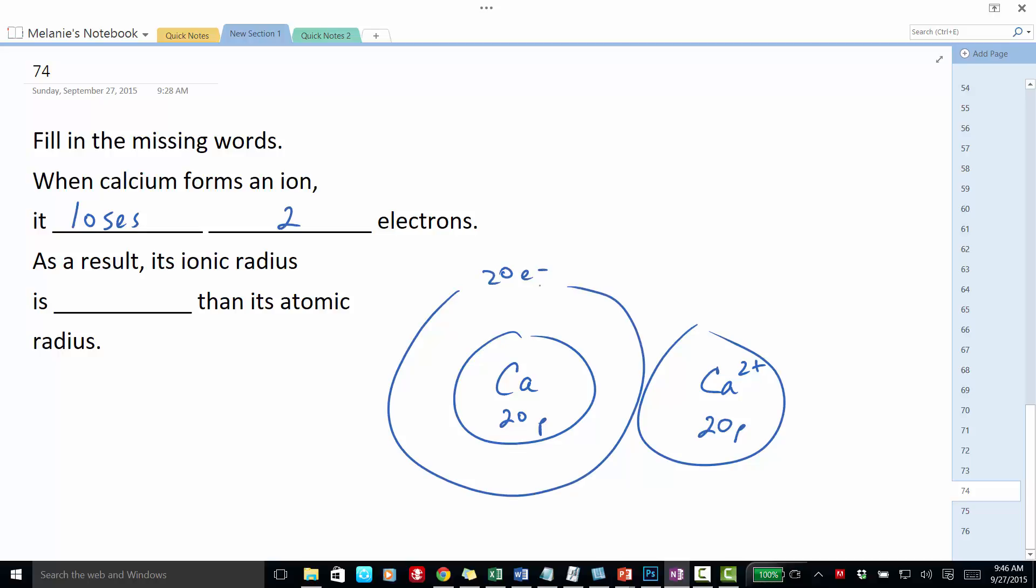They're obviously not all in one shell. The calcium ion is surrounded by two fewer electrons. It's surrounded only by 18 electrons because it has a net 2+ charge.